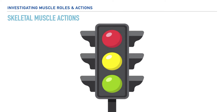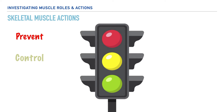Now that we have a better understanding about muscle properties, let's take a look at the actions muscles perform when it comes to producing movement for the body. First and foremost, we need to make note of the fact that our muscles provide us with the ability to prevent, control, and most notably, initiate movement.